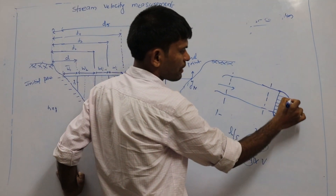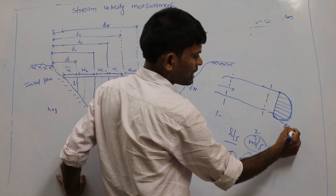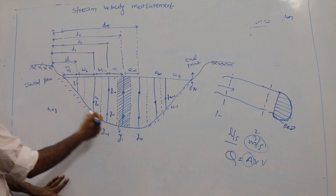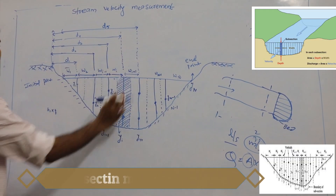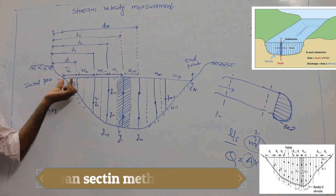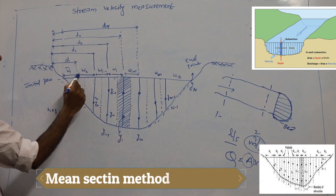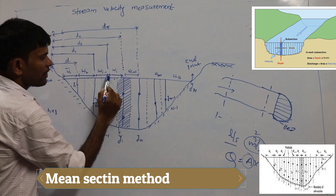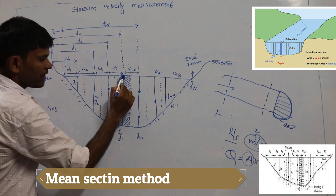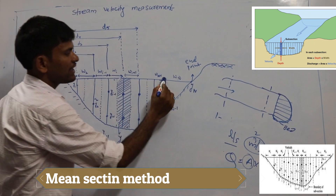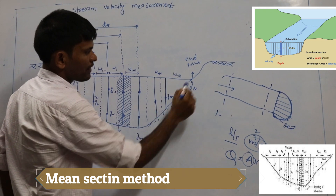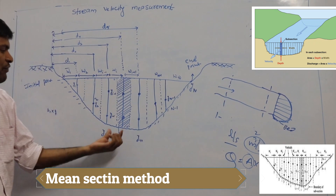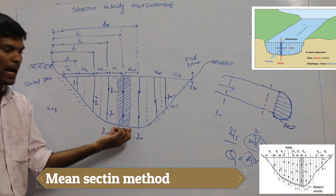Let us see the stream — this is the bottom cross-section area, simply called the bed. The entire bed is divided into a number of small segments with width w1 and depth y1, width w2 and depth y2, and so on up to width wn and depth yn-1.